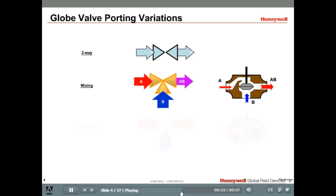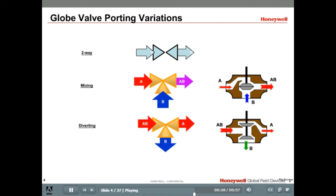With diverting valves, the fluid enters the AB port and is diverted proportionally into ports A and B based on the position of the stem. Unlike a ball valve or butterfly valve where the piping arrangements determine whether the valve is mixing or diverting, a globe valve is designed for each application. Therefore, it is critical to select the right valve for each application.